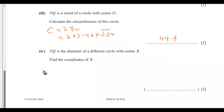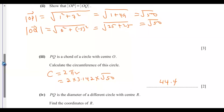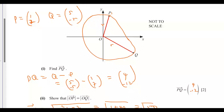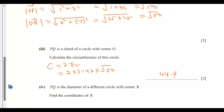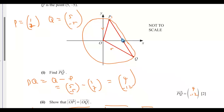Now, PQ is the diameter of a different circle with center R. Find the coordinates of R. So if PQ is the diameter, that means the center R will be along this line — PQ is the middle — so the center will be somewhere along here.